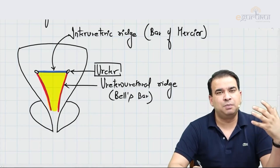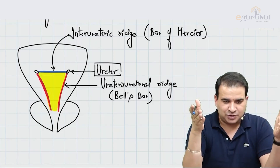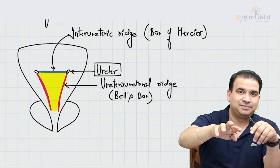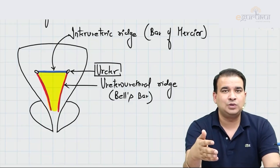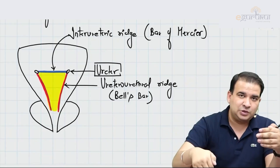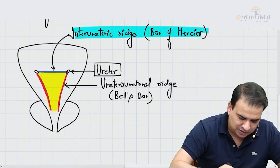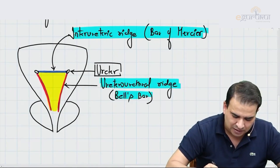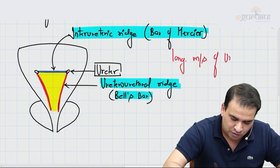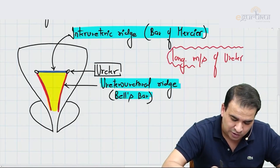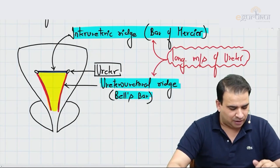The question is: what are these ridges made up of? Why do we have these elevations? The ureter comes into the bladder and ends at the angle of the trigone, but the inner longitudinal muscle of the ureter — those longitudinal muscles inside the ureter — they do not end at the ureteric opening. They go beyond into the bladder, run towards each other and also towards the urethra, and form these ridges. Both the interureteric ridge (Bar of Mercier) and the uretero-urethral ridge (Bell's Bar) are made up of the longitudinal muscle of the ureter.